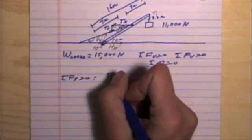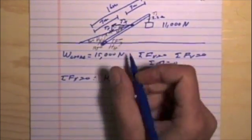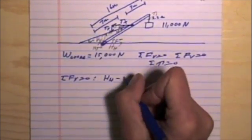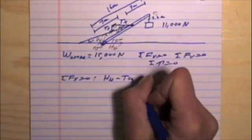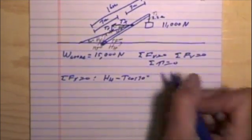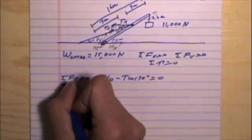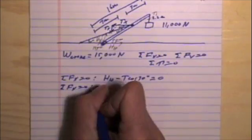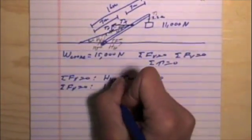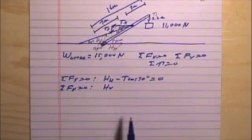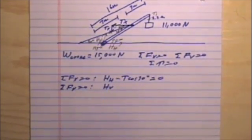Filling in the sum of all X forces: I have the horizontal hinge force going to the right, minus T times cosine of 30 going to the left, and there are no other X forces, so all this equals zero. Now summing the Y forces and setting those equal to zero as well — the hinge will have a vertical upward-pointing force, H sub V.